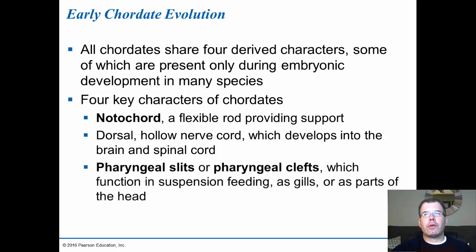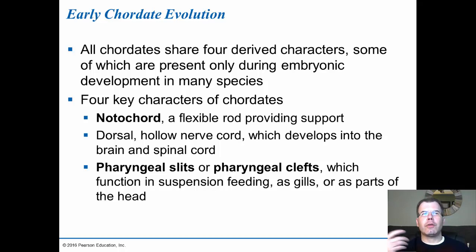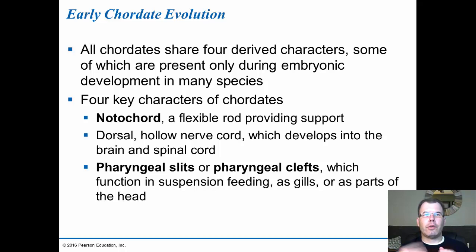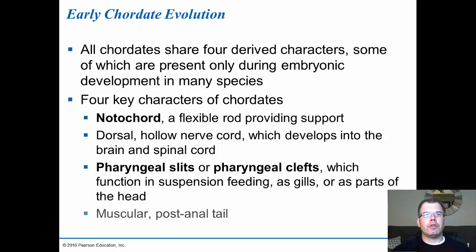You also see pharyngeal slits or pharyngeal clefts — all vertebrate animals show this, most of the time in development or the embryonic stage. These pharyngeal slits develop into different things depending on the animal. In humans, the first one often turns into the jaw, the second into the thyroid, and the third and fourth into the heart and lungs. In fish they turn into gills; in frogs they start as tadpoles with gills and then develop lungs.